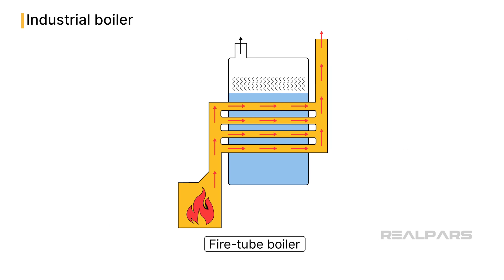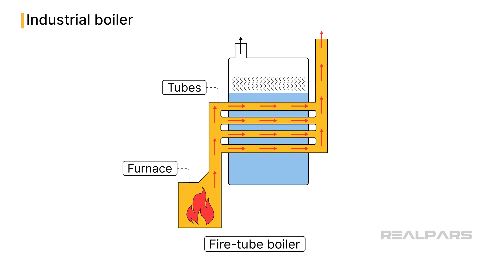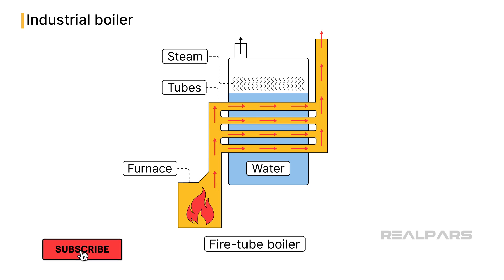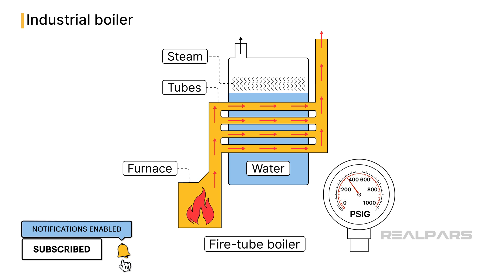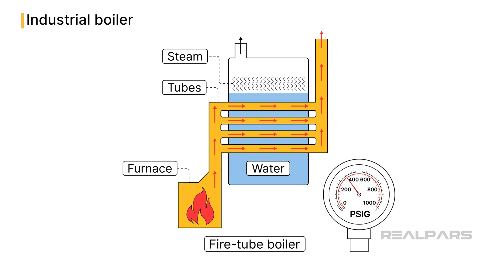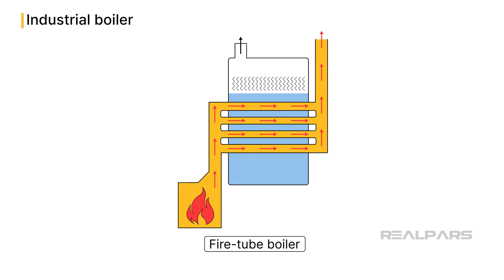In a fire tube boiler, fuel is burned in a furnace, which then creates hot gases. These gases flow through tubes surrounded by water. So the main characteristic of a fire tube boiler is that the water is outside the tubes. As the gases move through the tubes, they transfer their heat to the water, and that's what creates steam. For high pressure over 200 PSIG, or high capacity needs over 10 million BTU, fire tube boilers aren't ideal because the pressure vessel can be at risk of failure under these conditions.